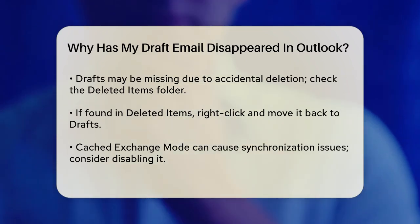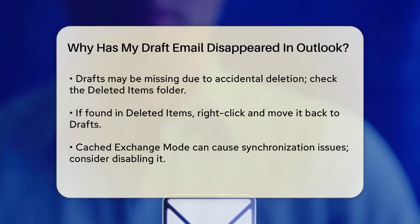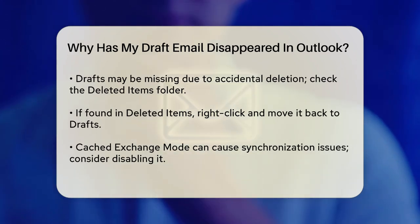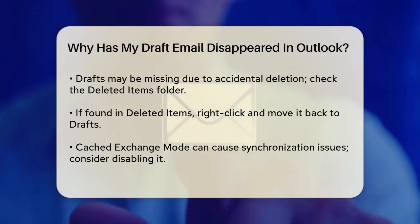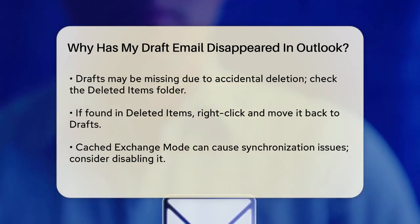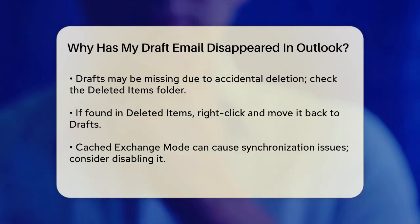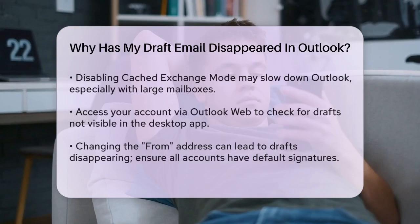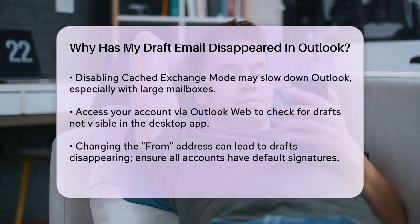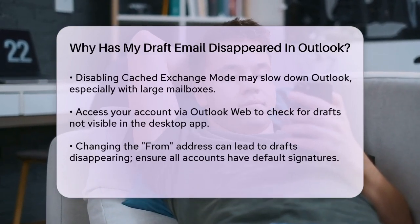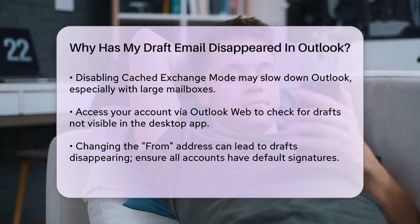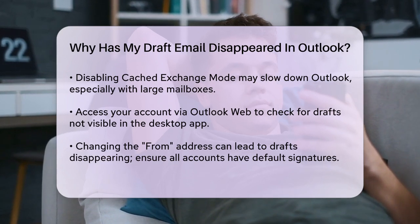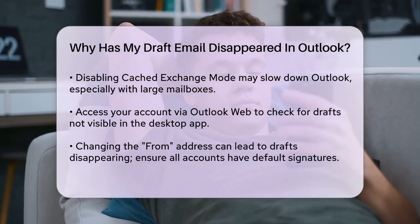Sometimes, issues with Outlook's settings can cause problems. Cached Exchange mode might be the culprit. Disabling this mode can help ensure your mailbox is fully synchronized with the server, which might recover your draft. However, keep in mind that disabling Cached Exchange mode can make Outlook slower, especially with a large mailbox or slow internet connection.